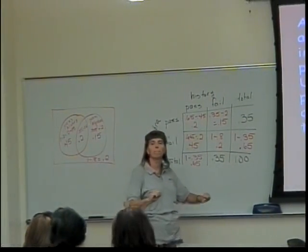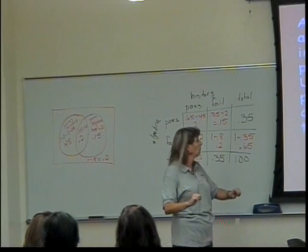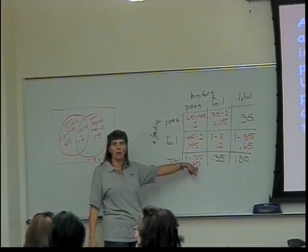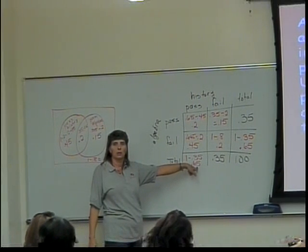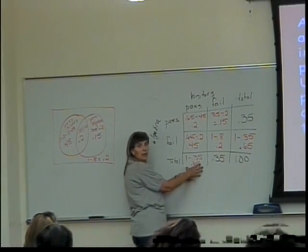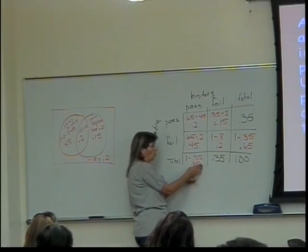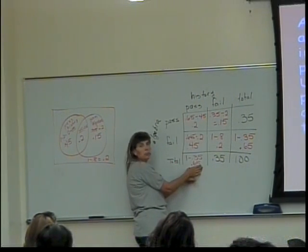So Alex will pass history is 0.65. This is the column where he passed history. So the total down at the bottom. It doesn't matter what he did in algebra. All together, he's going to pass history with 0.65 probability.